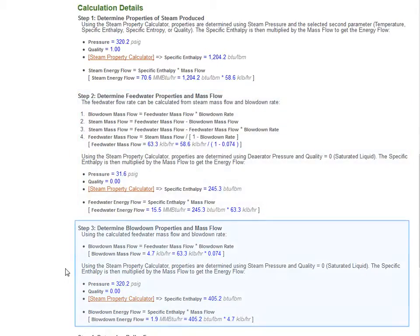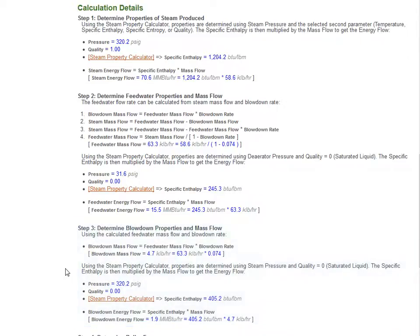Similarly, the mass flow for the blow down is also calculated using the blow down rate and steam mass flow. The properties of the blow down are set to those of a saturated liquid at boiler pressure.